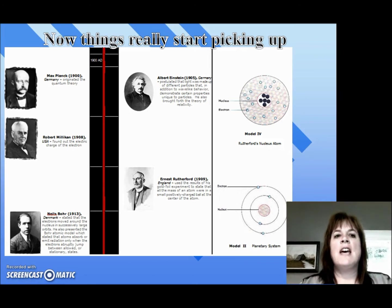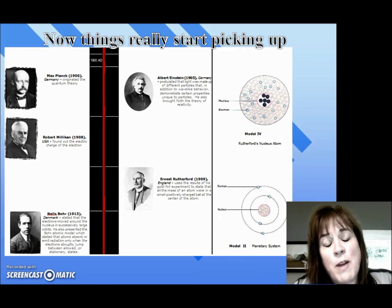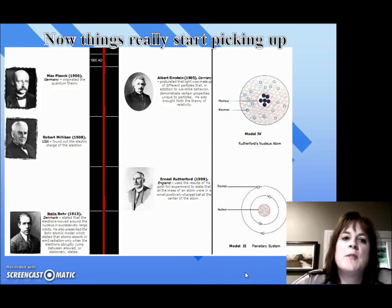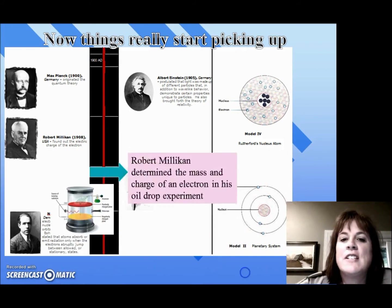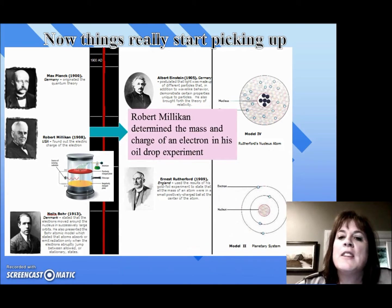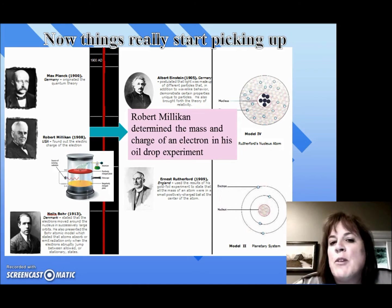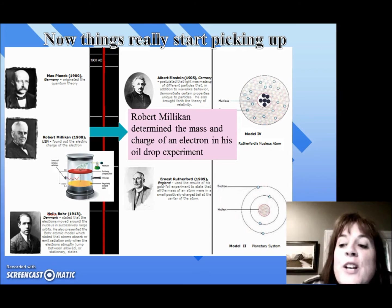We get to the 1900s, and we've got awesome guys like Albert Einstein and Max Planck — we'll talk more about them when we talk about quantum theory. Next comes Robert Millikan from the USA. Millikan actually did this really cool oil drop experiment that determined the mass of an electron. And using information developed by J.J. Thompson, he was able to also determine the charge on the electron.